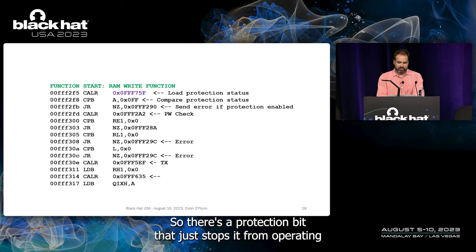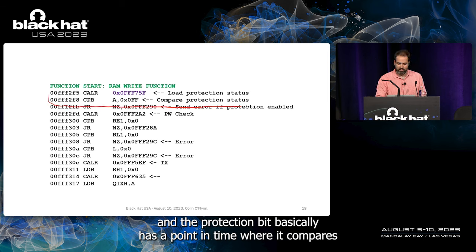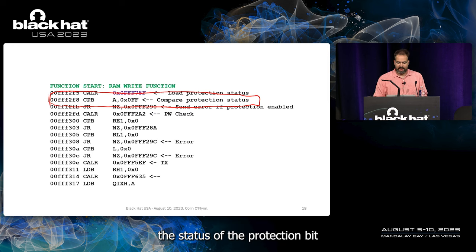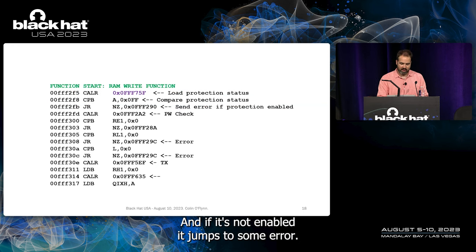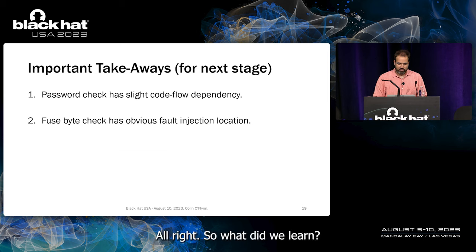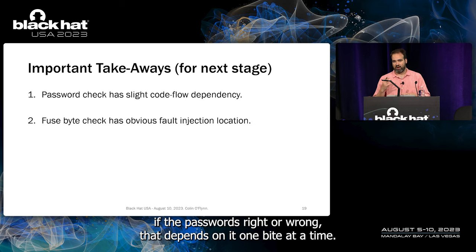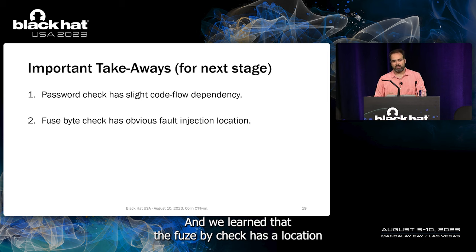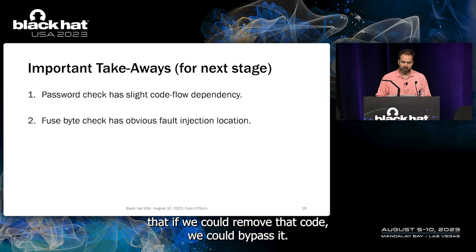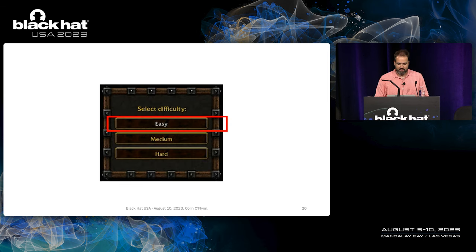For the protection bit: there's a point in time where it compares the status of the protection bit flag and says 'is this enabled?' If it's not enabled it jumps to an error. We want to effectively delete that function — and this type of conditional logic is a good area to insert a fault using fault injection. So the password check has code flow depending on correctness one byte at a time, and the fuse byte check has a location where removing that code bypasses it.